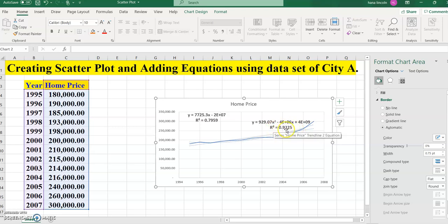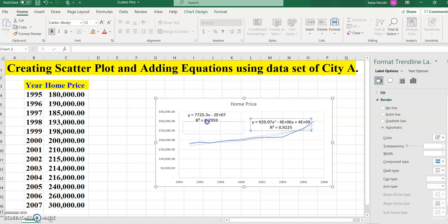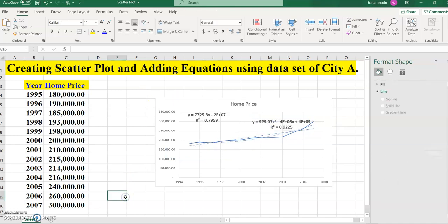So whenever you see the coefficient correlation is very close to number one, that's where you're going to see a strong model equation. So we're going to choose the quadratic equation as our base model. We can say here the quadratic equation model is the best one for the given data set.